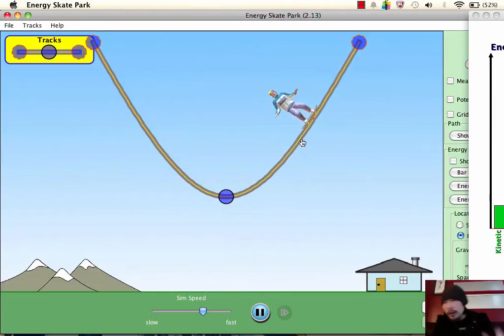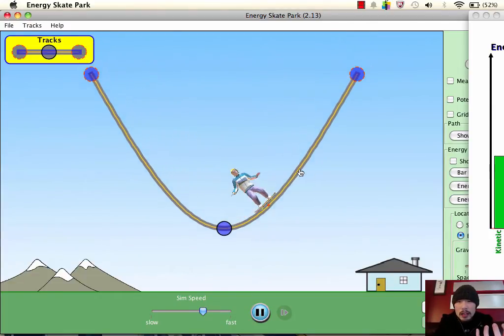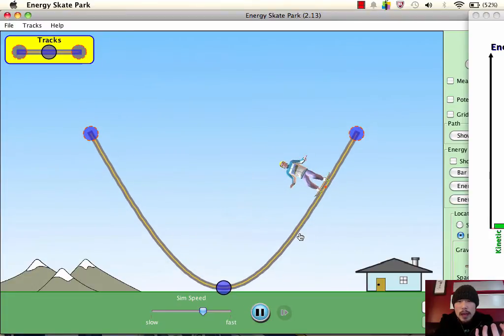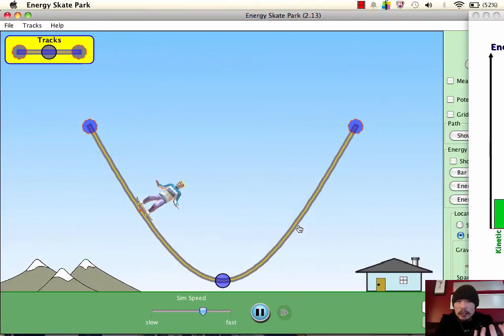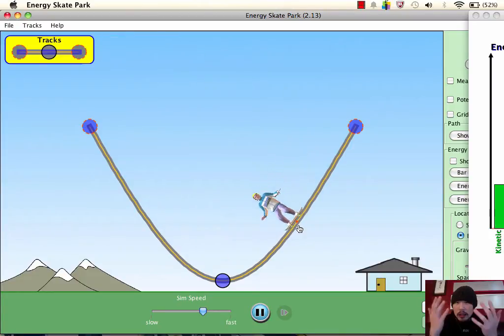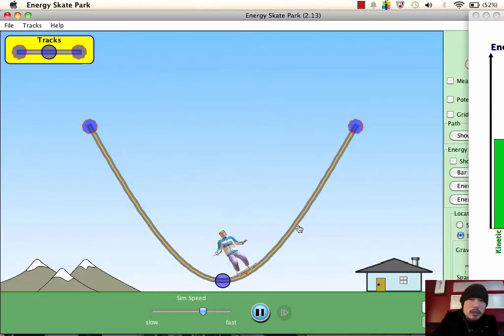Now, if I do negative work, if I bring the skate park down, I'm doing negative work. Therefore, I take away some of that energy. Alright. Because work and energy, they go hand in hand. They go simultaneously hand in hand. They're proportional. The more work you put into a system, the greater the energy.